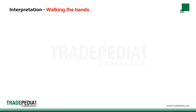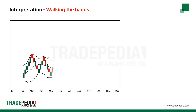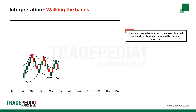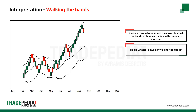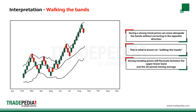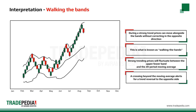Walking the Bands: During a strong trend, prices can move alongside the upper or lower bands with many touches without correcting in the opposite direction. This is what is known as walking the bands. Strong trending prices will fluctuate between the upper or lower band and the 20-period moving average. A crossing beyond the moving average alerts for a trend reversal to the opposite side.